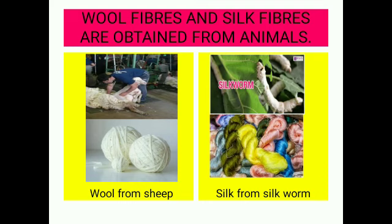Wool is obtained from sheep. Silk is obtained from silkworms, and there are different types of silkworms.